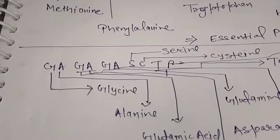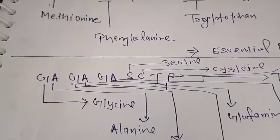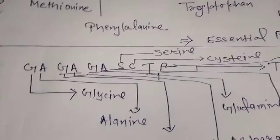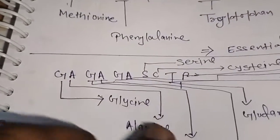Non-essential proteins are found in our body. You can use the shortcut trick: GA GA GA GA SC TP. Like sa re ga ma pa, you can remember GA GA GA GA SC TP. G means glycine.